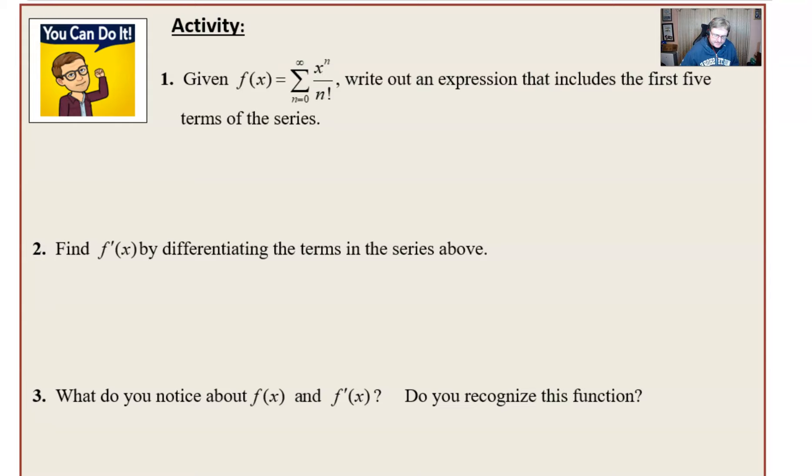Your second job is to find the derivative by differentiating each term one by one in that series you wrote above. And then three, what do you notice about f(x) and f prime, and do you recognize what the function f(x) would really be? Pause the video and give this a shot. All right, let's take a look at the solution. First of all, write out an expression that includes the first five terms. If n equals 0, we start with 1 plus x plus x squared over 2 plus x cubed over 6 plus x to the fourth over 24.